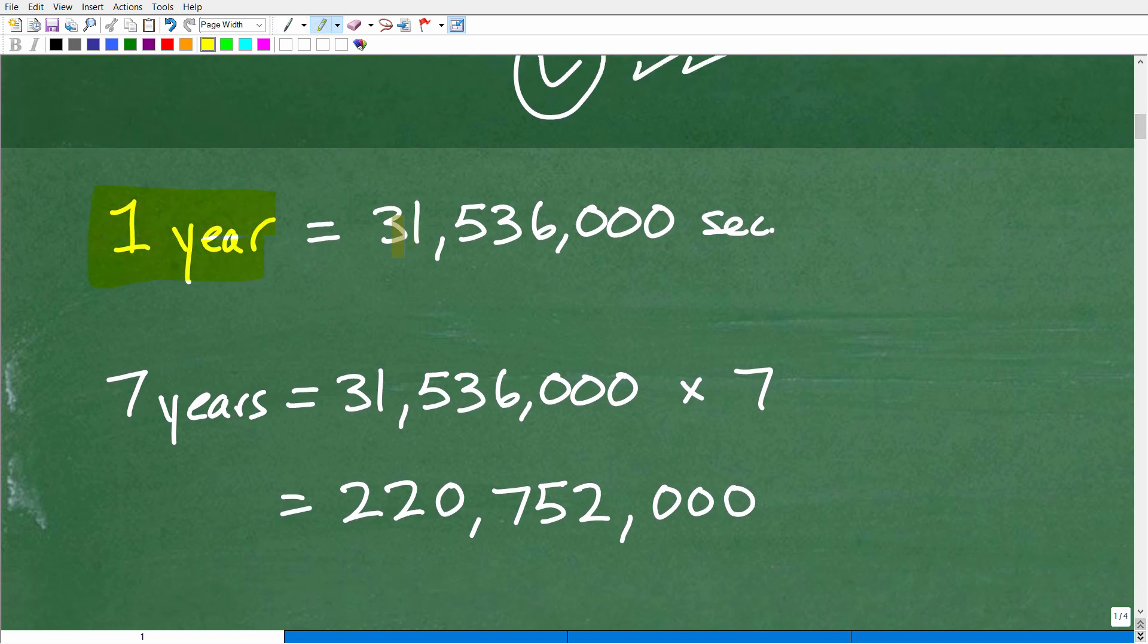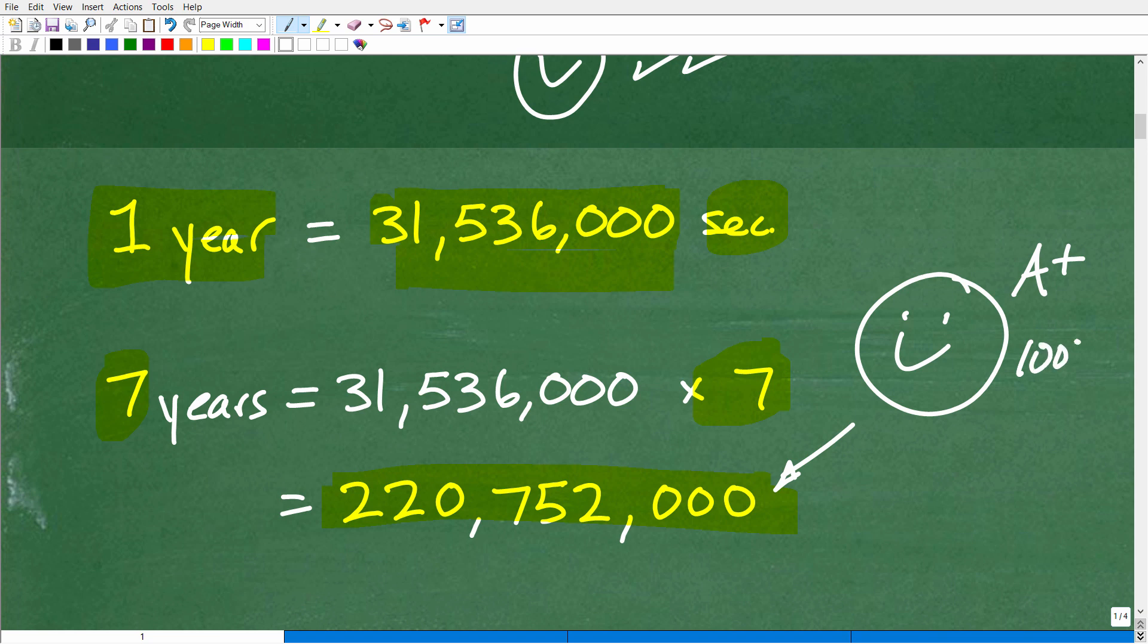So in one year, we have 31,536,000 seconds. So how many seconds are there in seven years? Well, obviously, we just multiply this annual, how many seconds are in one year by seven, and we get this number right here. So we get 220,752,000. All right, so this is our final answer, and if you were able to calculate this correctly, I will go ahead and give you a nice happy face, an A+, a 100%, and a few stars. However, you're not going to get the final bonus unless you were able to take this number and put this into scientific notation.